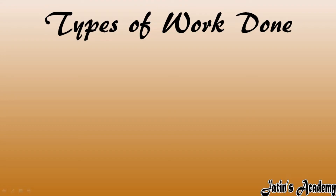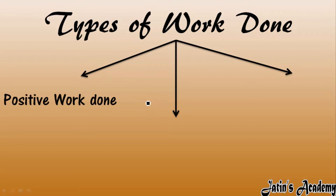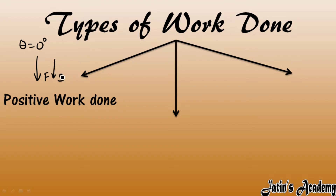Next we have types of work done — how many types of work done we have. Basically we have three types: first we have positive work done. Positive work done means when the angle between the force and the displacement is zero, meaning both force and displacement occur in the same direction. In positive work done, cosine of zero degrees is one, which is a positive value.